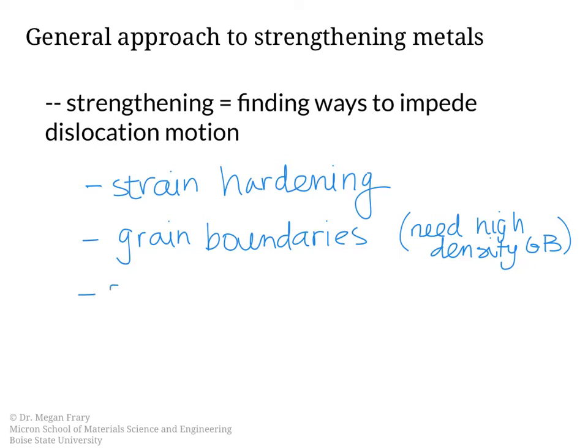Another method is solid solution strengthening. By creating an alloy — that's why most of the strongest materials are actually alloys — you can do solid solution strengthening, and those solute atoms could either be substitutional or interstitial.